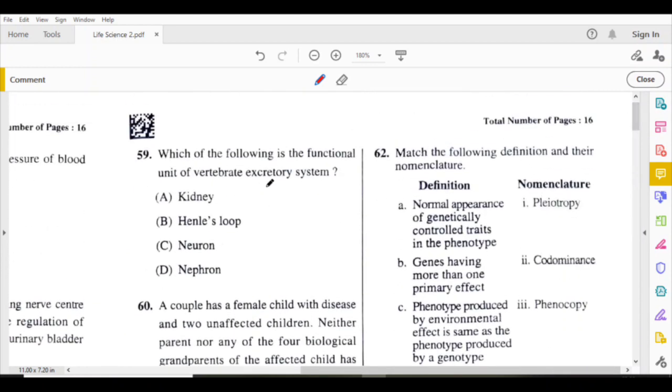Which of the following is the functional unit of vertebrate excretory system? The structural and functional unit of kidney is nephron. Here you may be confused.